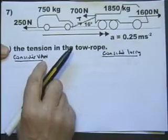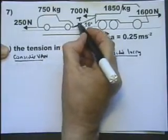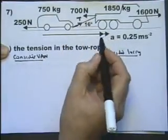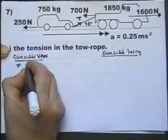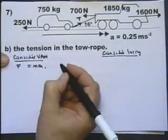So let's look at considering the van. Considering the van, this is the tension we are thinking about. So, again, we've got force equals mass times acceleration. Tell the examiner what you're thinking.